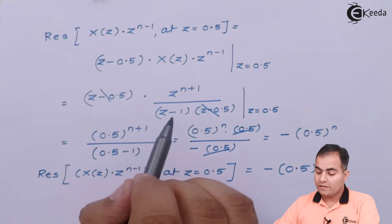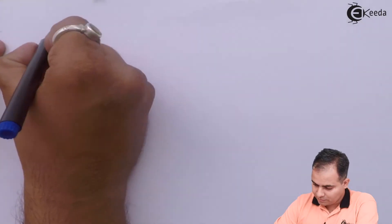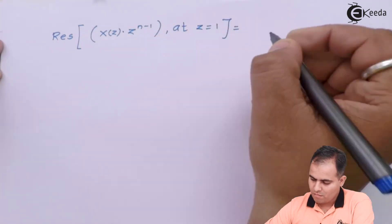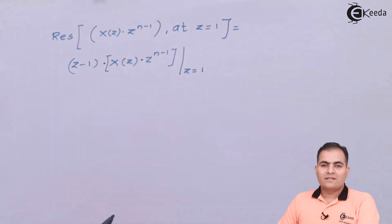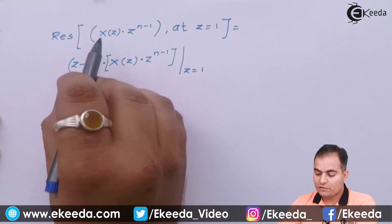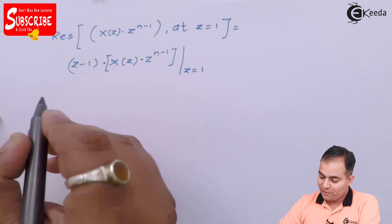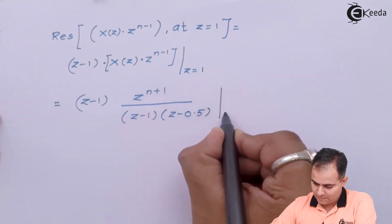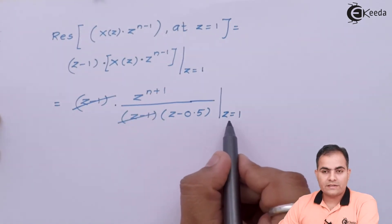Next, we calculate the residue at Z = 1. We multiply by (Z − 1) and substitute Z = 1 into X(Z)·Z^(n−1). The (Z − 1) terms cancel automatically, and then we substitute Z = 1 into the remaining expression.